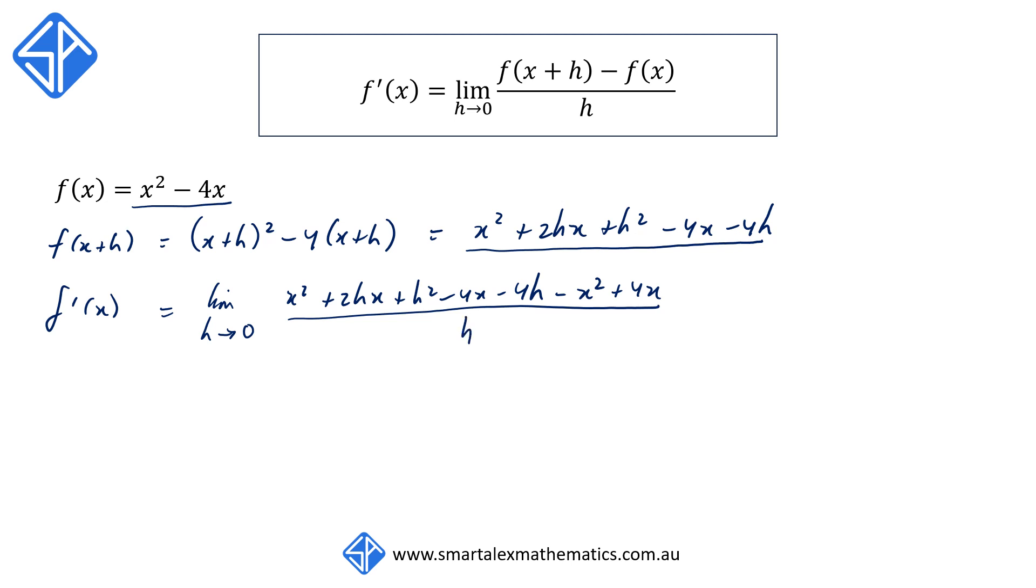Next, we're going to cancel out by collecting like terms. So x² minus x² will cancel out. The -4x term and the +4x term will also cancel out as well. This will then give us the limit as h goes towards 0 of 2hx + h² - 4h over h.